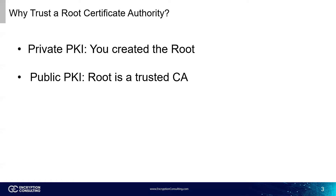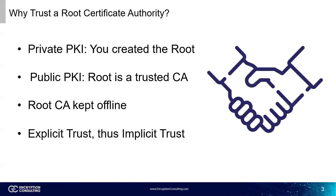If you're using a public PKI provided by another organization, then the root CA is likely a trusted root. A trusted root has intermediate CAs in the trusted root store of major web browsers. Since these major web browsers trust these CAs, you can also trust them. Another reason to trust the root CA is it is kept offline after it sends out its first batch of certificates. These certificates go to all the issuing and intermediary CAs within the PKI. Keeping the root CA offline protects it from compromise and keeps the certificate chain of trust intact. Since you explicitly trust the root CA, you can implicitly trust all the certificate authorities that it has issued certificates to.